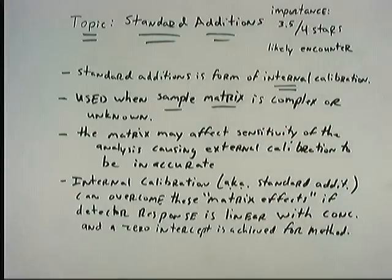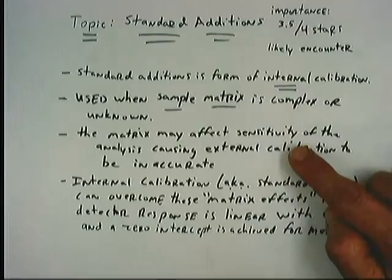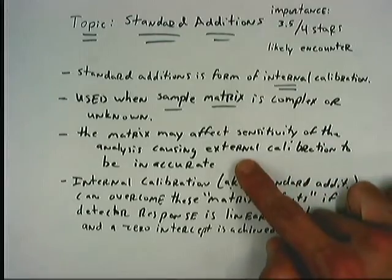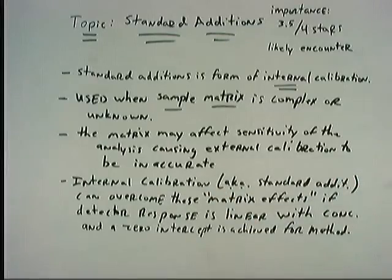If the sample matrix is very complicated, it's entirely possible that other molecules might interfere in the analysis. This might affect sensitivity in some way, making the method either less sensitive or more sensitive. If you reference external calibration points, your result is likely to be inaccurate because the sensitivity of the method is different in the sample matrix compared to external set of samples. We can overcome this challenge by internal calibration or carrying out the method of standard additions. Therefore, this standard additions method is important because it can overcome these matrix effects.